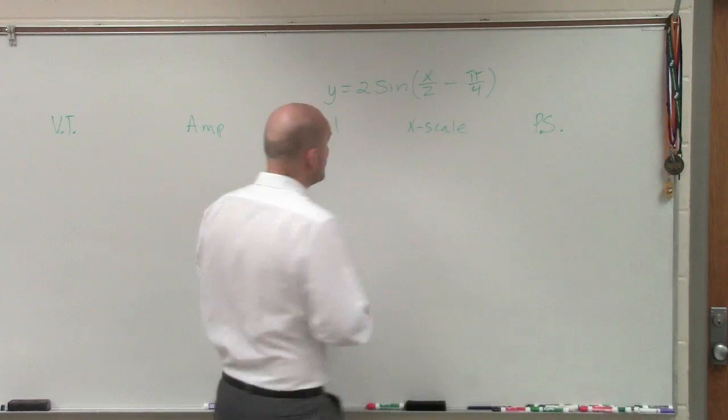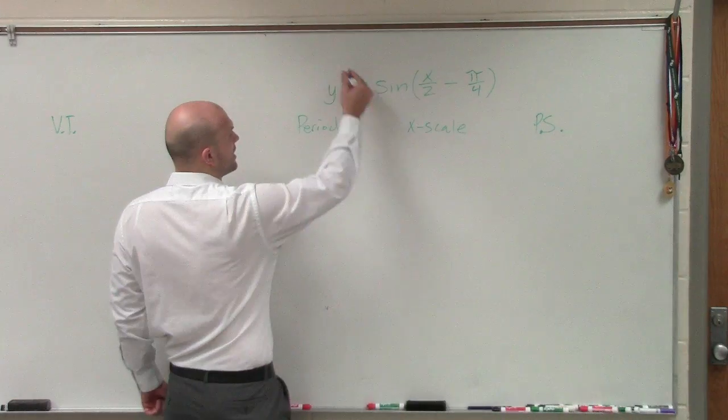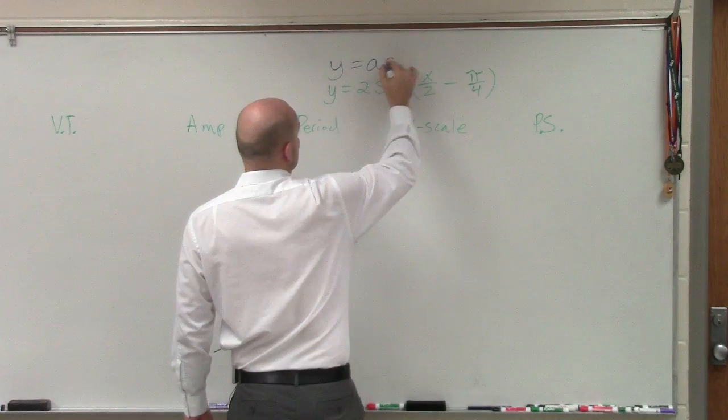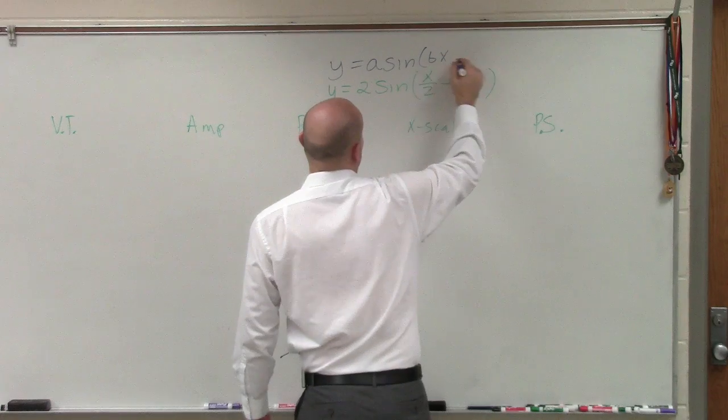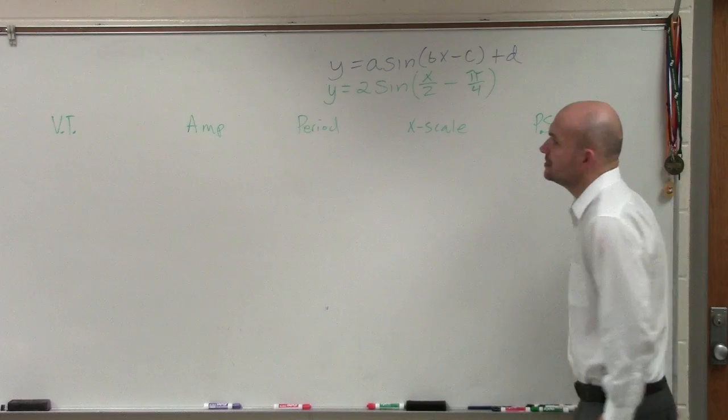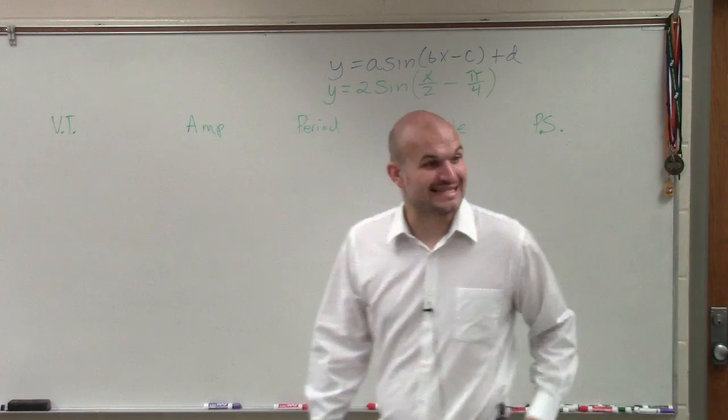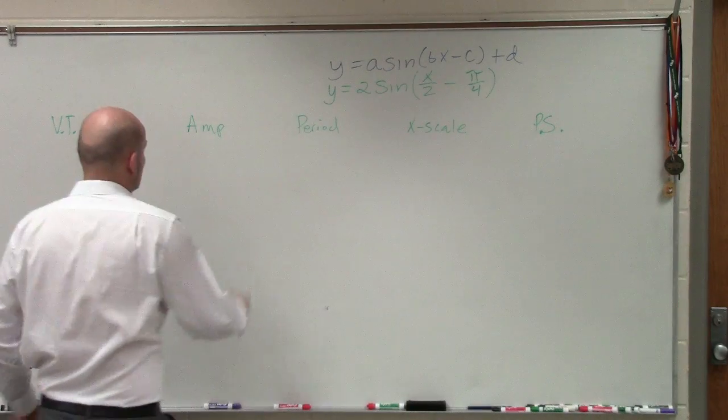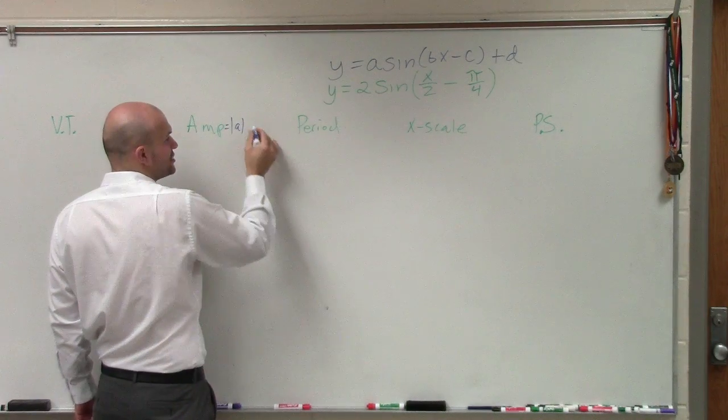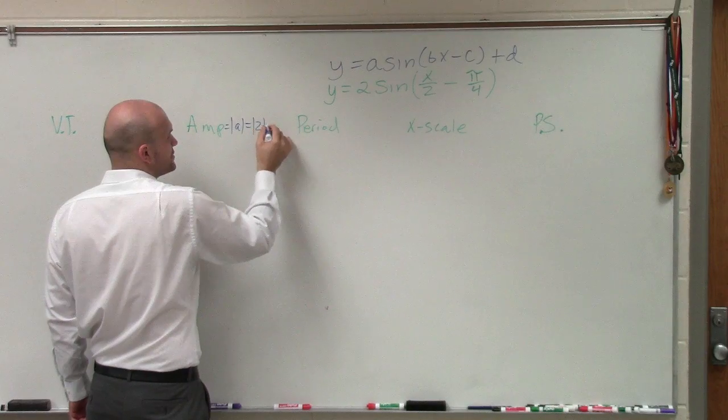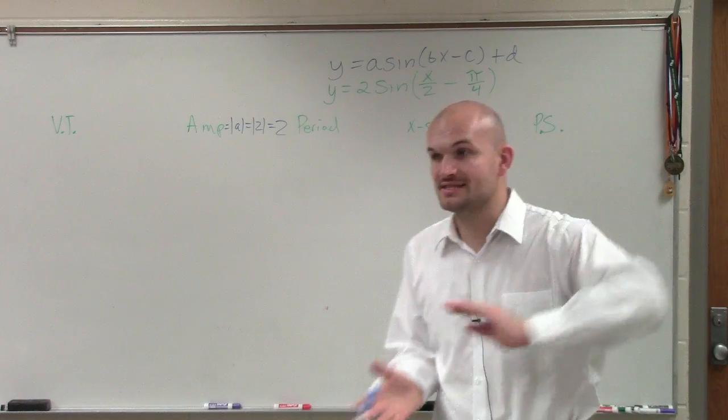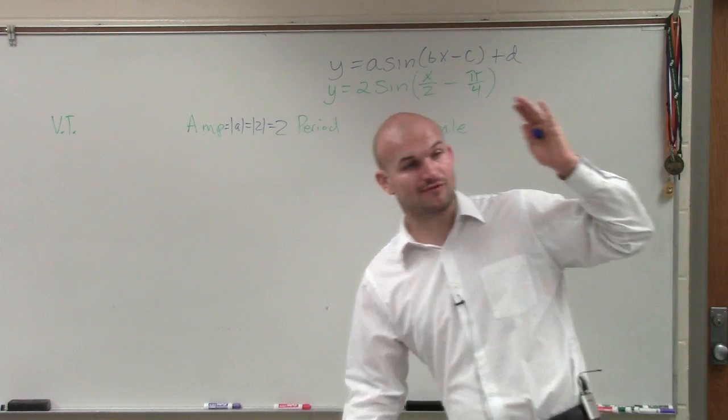Let's remember what is our parent function of the sine, or at least our transformation: a times sine of bx minus c plus d. The amplitude is the absolute value of a. We look at our a, which is 2, so the absolute value of 2, which is just equal to 2.